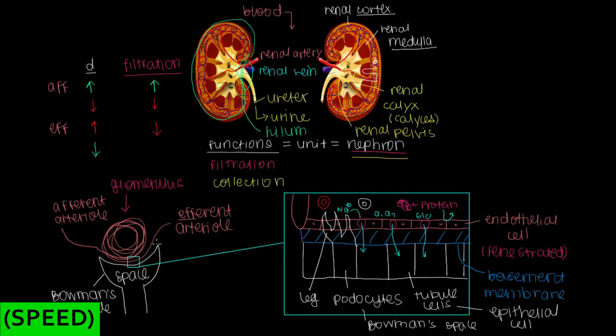On the flip side, if we decrease the diameter of our efferent arteriole, that makes it difficult for our runners to leave this fenestrated vessel. So there's going to be some backup. There's going to be a lot of ions and amino acids and glucose hanging around here near these holes. If blood backs up, then they're going to be filtered through these holes and collected into Bowman's space. So our filtration rate will increase because there's backup that allows more time for filtration.